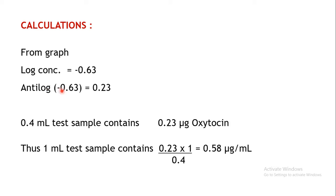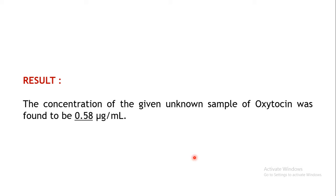From the graph we know that the log concentration of the test is −0.63. By finding the antilog, we can get the concentration in micrograms: antilog of −0.63 is 0.23. So 0.23 micrograms of oxytocin is present in 0.4 ml of test sample. Converting to micrograms per ml: 0.4 ml contains 0.23 µg, so 1 ml contains 0.23 × 1 ÷ 0.4 = 0.58 micrograms per ml.